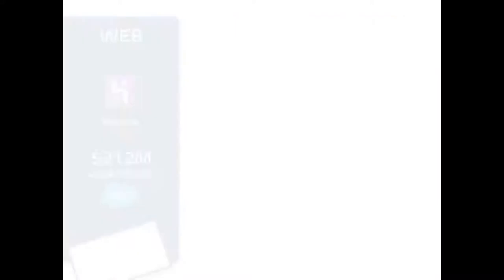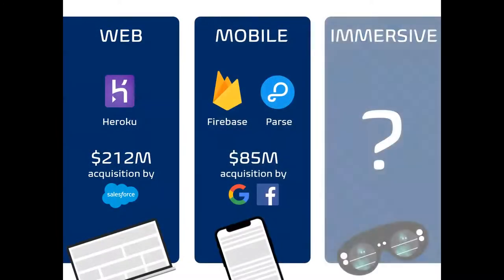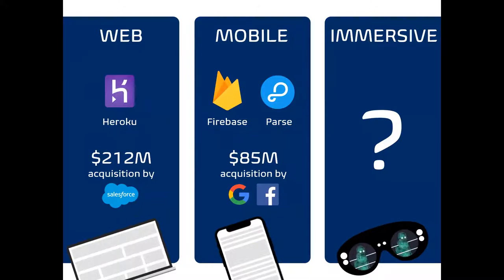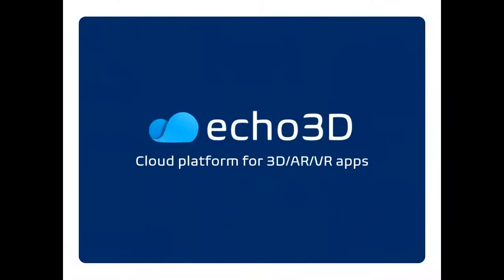If you want to build a website, you can use something like Heroku as your cloud platform, upload images and videos. If you're building a mobile app, you can use Parse or Firebase as your backend as a service. So you went from web to mobile to this new technology — AR, VR, 3D, XR, immersive metaverse, call it whatever — and the question has to be asked: who's going to build the same cloud platform for this new type of content? And you've guessed it — that's what we do at Echo 3D.